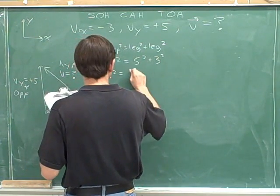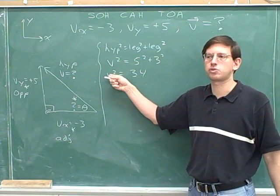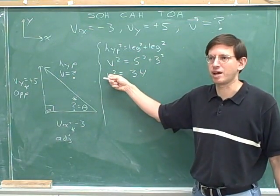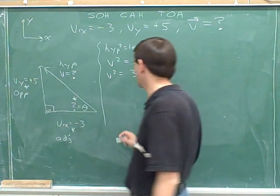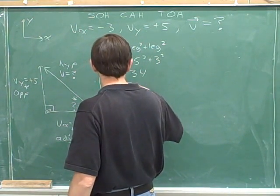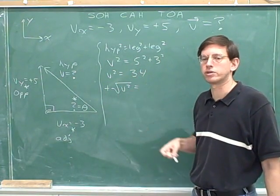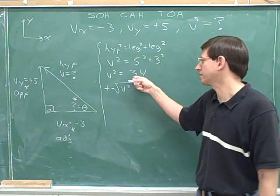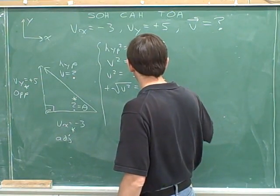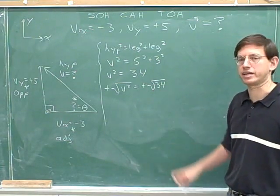So, 5 squared plus 3 squared is 34. Now we have to use algebra to get rid of this square. We'll do the opposite. The opposite of squaring is square rooting. Since I took the square root of the left-hand side, the golden rule of algebra says I have to also take the square root of the right-hand side.